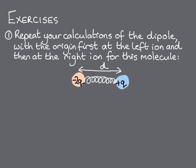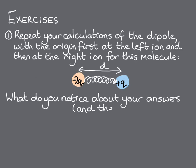So this leads us to our first exercise, which is to repeat the calculations that we made for the dipole, but for this molecule in which the anion has charge minus 2Q and the cation has charge plus Q. You should notice something interesting both about the molecule and about your answer in this case.